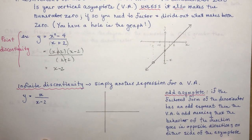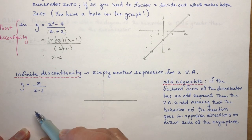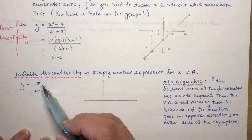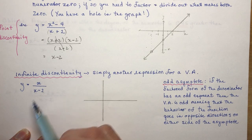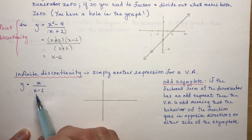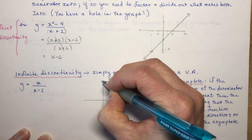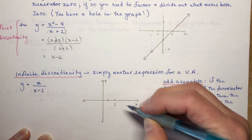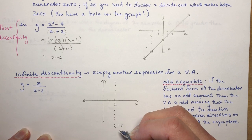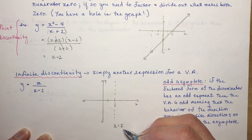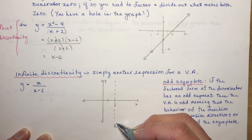Now let's go to infinite discontinuity — simply another expression for a vertical asymptote. For x/(x−2), what makes the denominator 0 is 2. I put in a dotted line and label it x = 2. When you state a vertical asymptote, don't say just '2' — it's the equation of a line: x equals 2. Don't forget that.